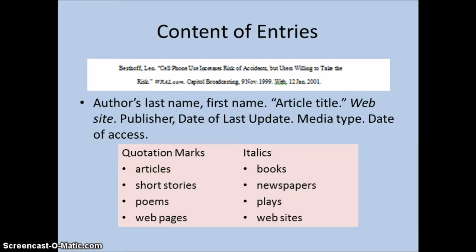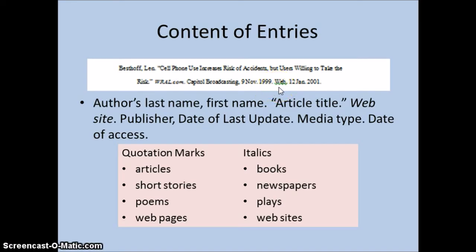Smaller units, like articles, poems, short stories, and web pages, get quotation marks, while larger units, like books, newspapers, plays, and websites are italicized. The article title is followed by the website in italics and a period, and then by the publisher of the website, comma, and the date that the site was last updated, period. It's followed by the type of media — which is 'web' for this source, as opposed to print or some other type of source — followed by a period.